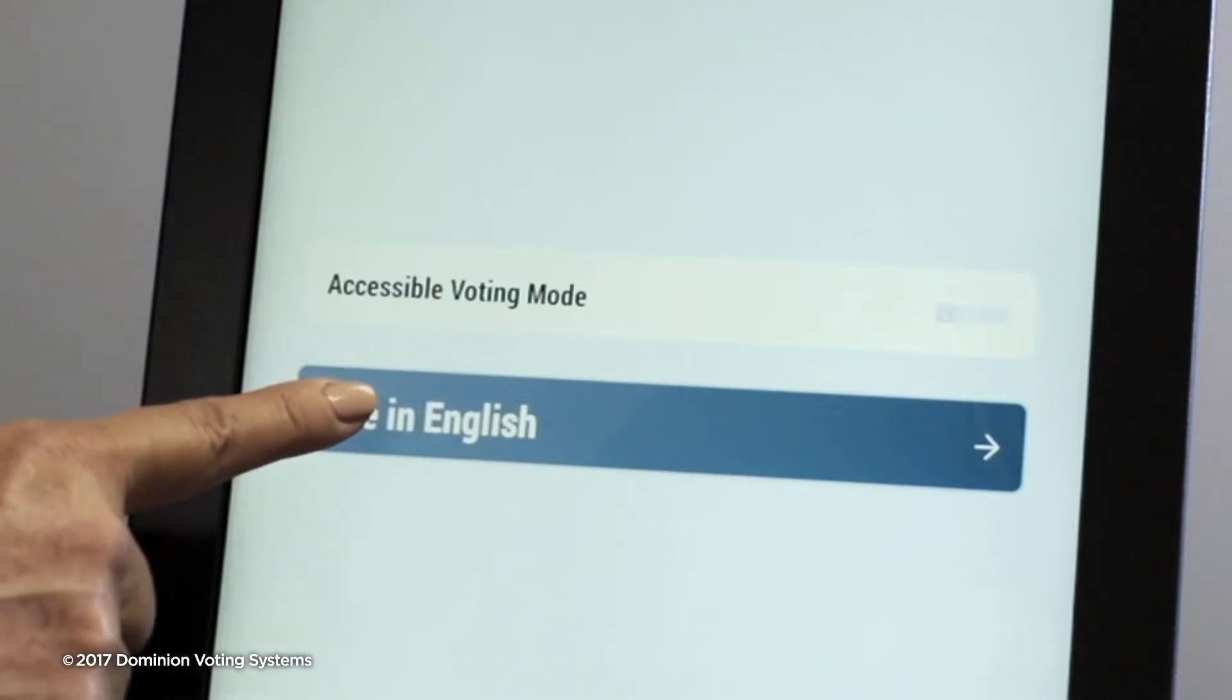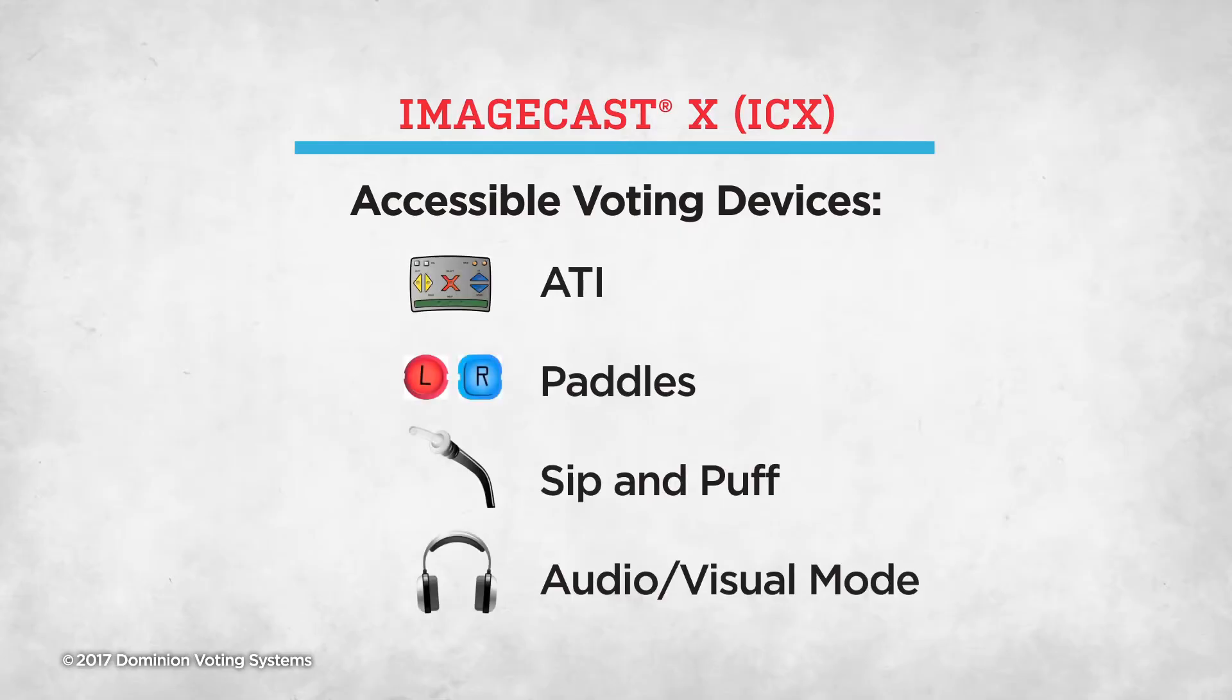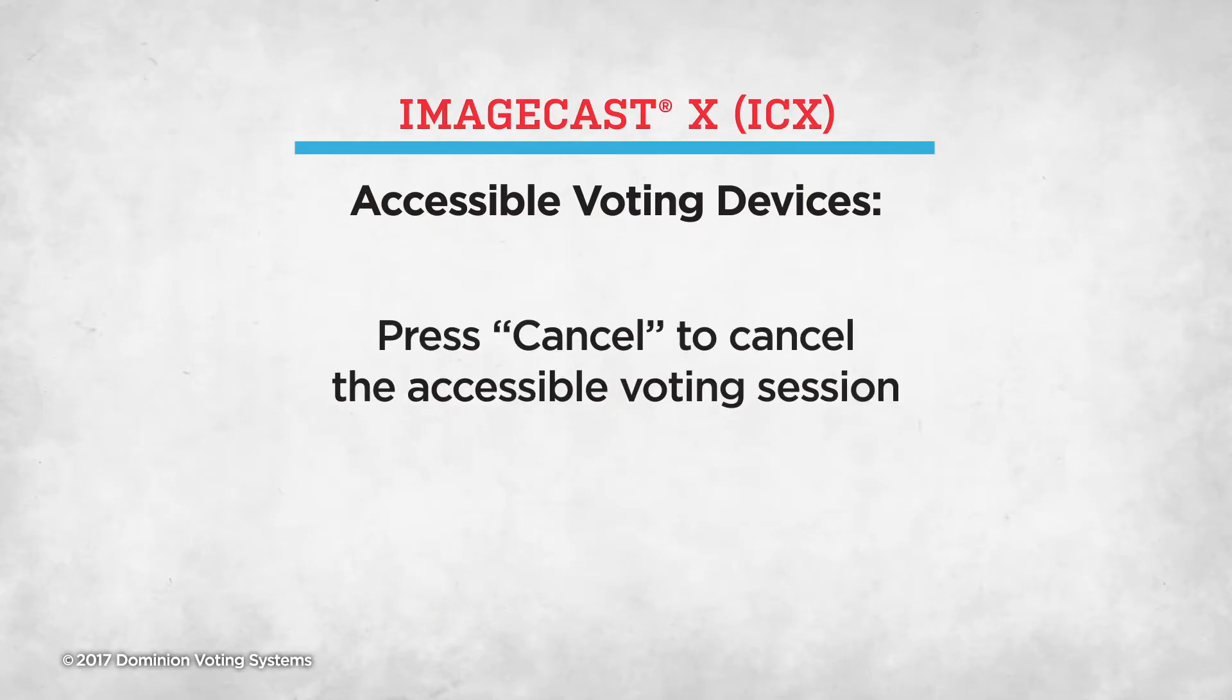Allow the voter to select the language of their choice. The voter then selects the preferred accessible voting device or audiovisual mode. Press the Cancel button to cancel the accessible voting session.